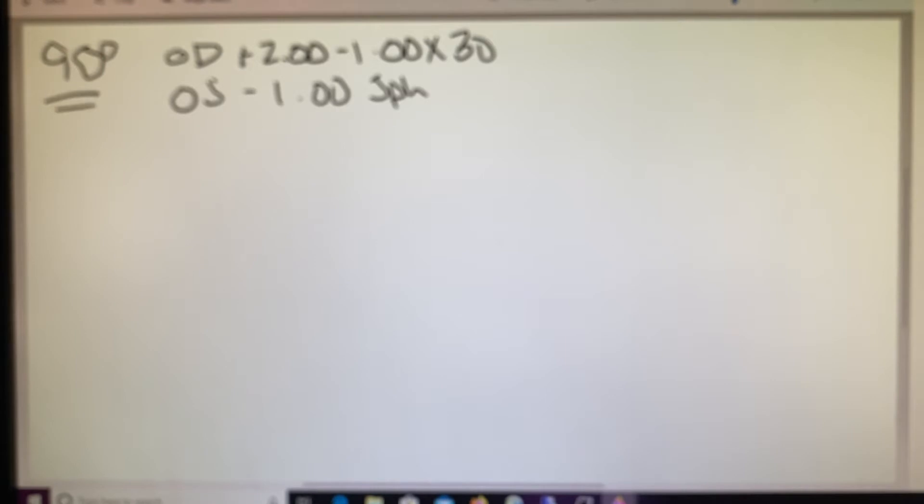Now we need to know what the power is at 90. So as they move vertically down the lens, what is that power that they're working in? Power and requested meridian, the given axis is 30, our requested axis is 90, and we have a difference here of 60 degrees. We learned that 60 degrees away equals 75% of the cylinder. So 75% of our minus one is going to equal minus 75. We're going to combine that minus 75 with our sphere of plus two, and we learned that the power at 90 is plus 1.25.